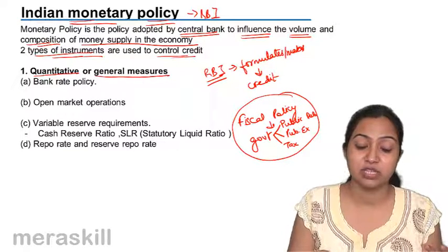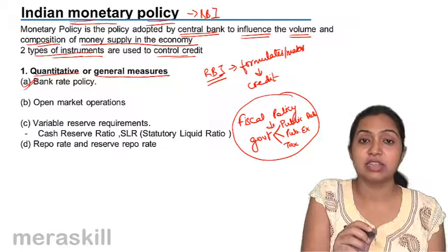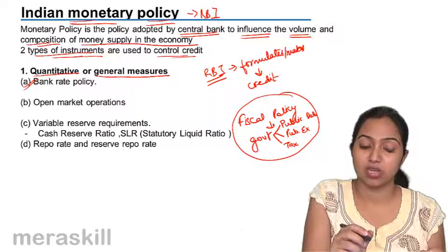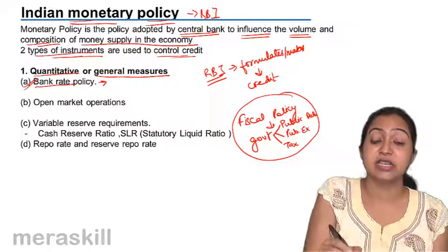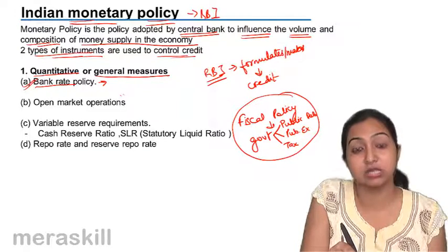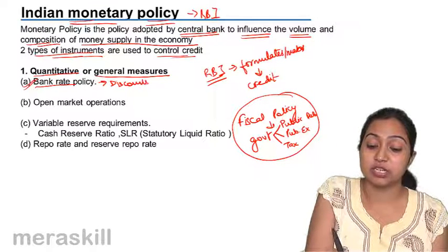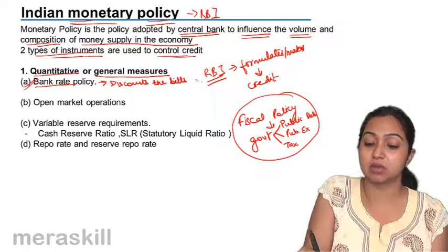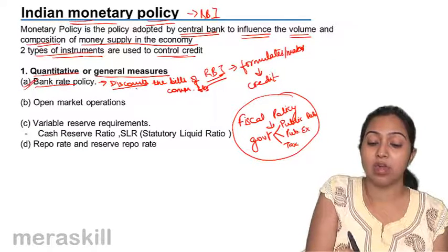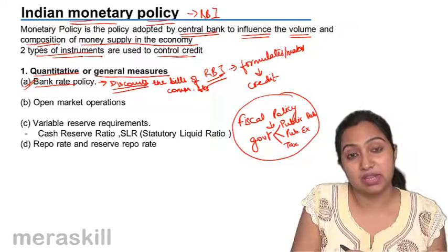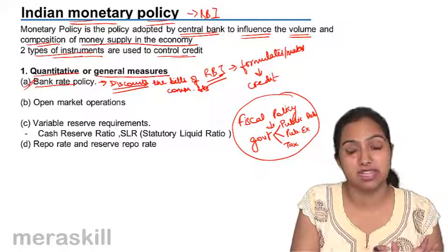The first quantitative measure is the bank rate policy. This is the most important and most primitive method used by RBI to control credit. Bank rate is the rate at which RBI discounts the bills of commercial banks. It is also known as discount policy. In simpler terms, it is the rate at which the commercial bank borrows from the central bank.